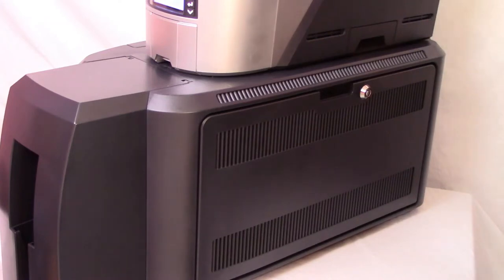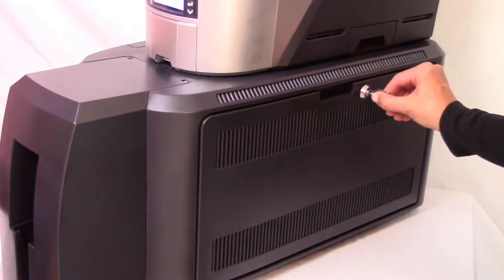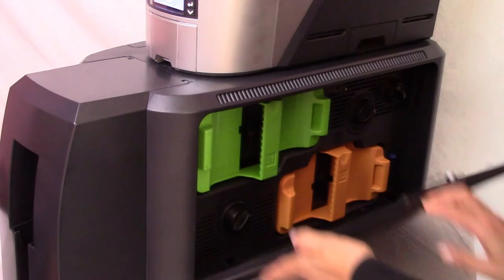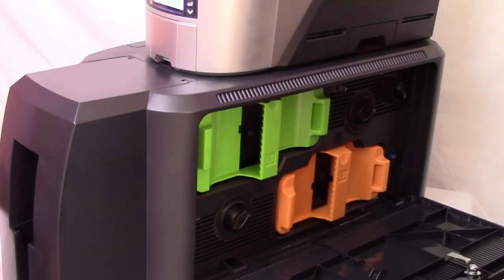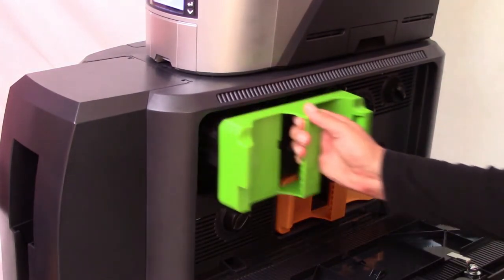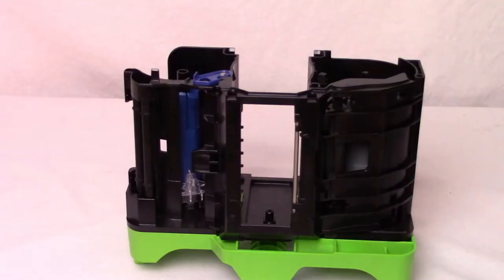If your laminator has locks, unlock and open the laminator access door. Remove the laminator cartridge from the printer. Place the cartridge on a smooth level surface for loading.